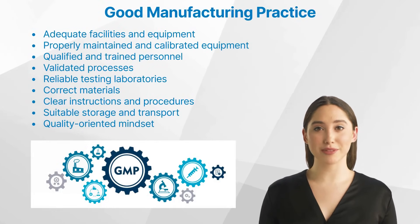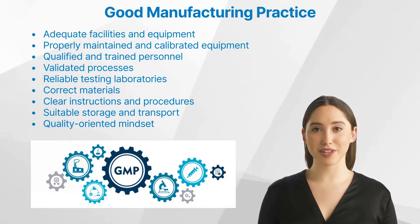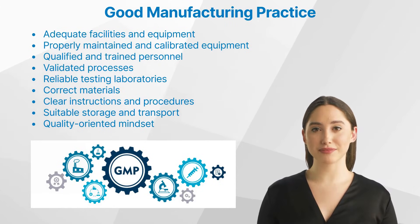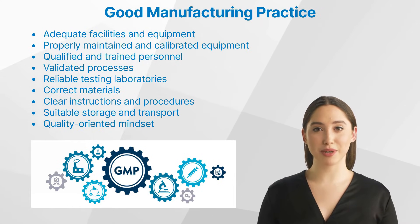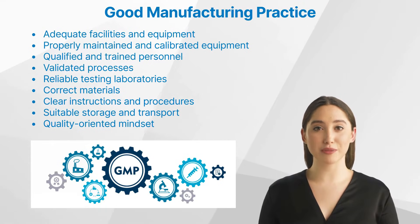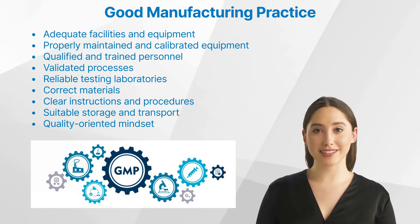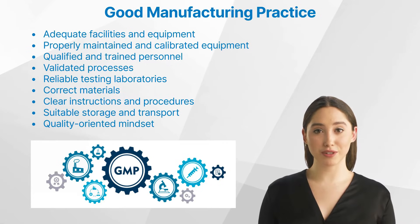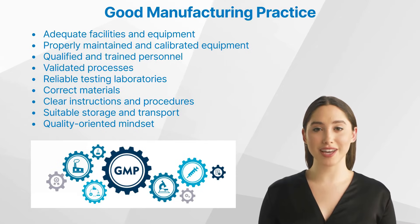But what are the key principles of GMP? There are several key principles that underpin GMP. These include adequate facilities and equipment, properly maintained and calibrated equipment, qualified and trained personnel, validated processes, reliable testing laboratories, correct materials, clear instructions and procedures, suitable storage and transport, and a quality-oriented mindset. These principles form the backbone of GMP and are crucial in ensuring the safety, efficacy, and quality of pharmaceutical products.